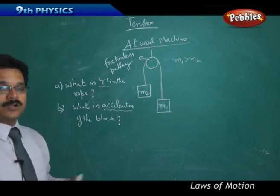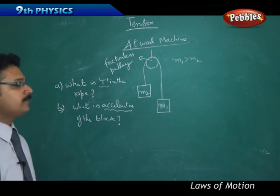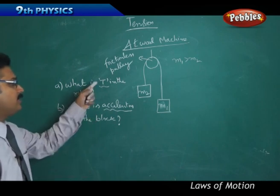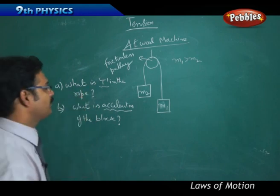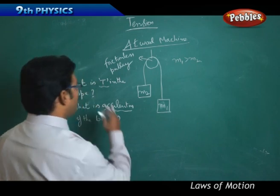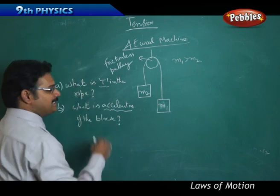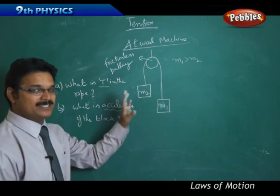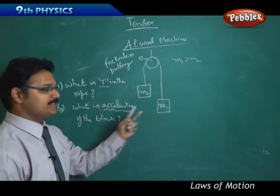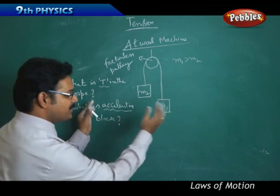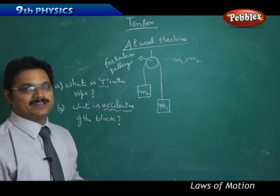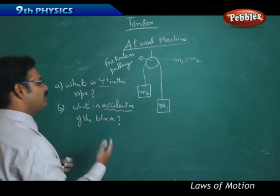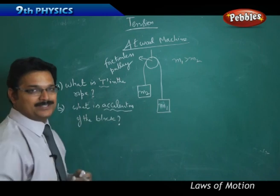This is very useful for competitive examinations too. When you take this type of Atwood machine as a system with two bodies, divide it into two parts and draw free body diagrams — then it becomes very easy to find the formulas for tension and acceleration.